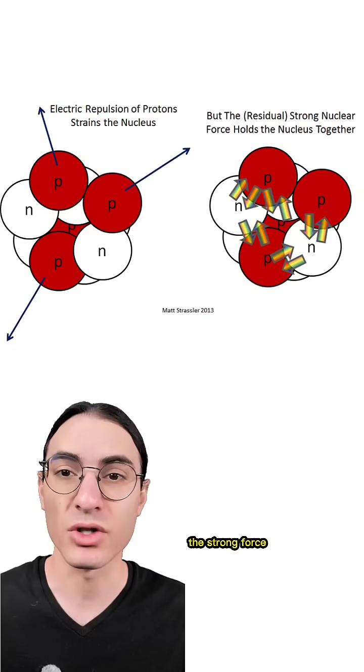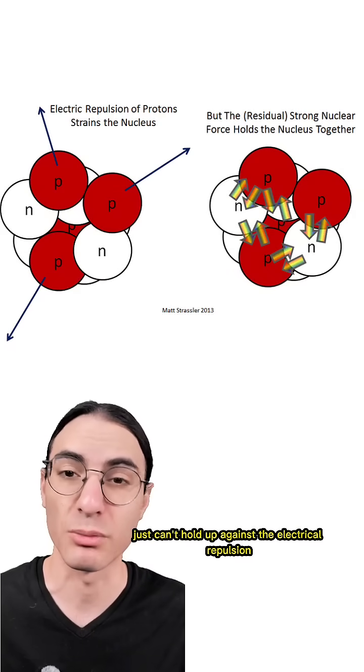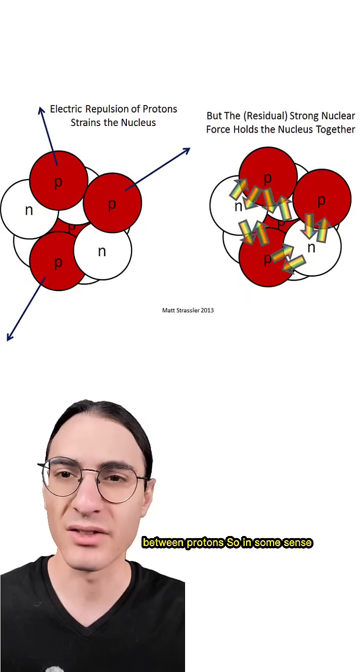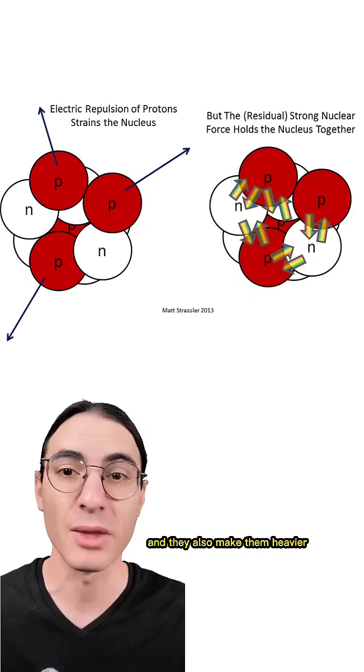Without neutrons in an atomic nucleus, the strong force just can't hold up against the electrical repulsion between protons. So in some sense, neutrons stabilize the nuclei of atoms, and they also make them heavier.